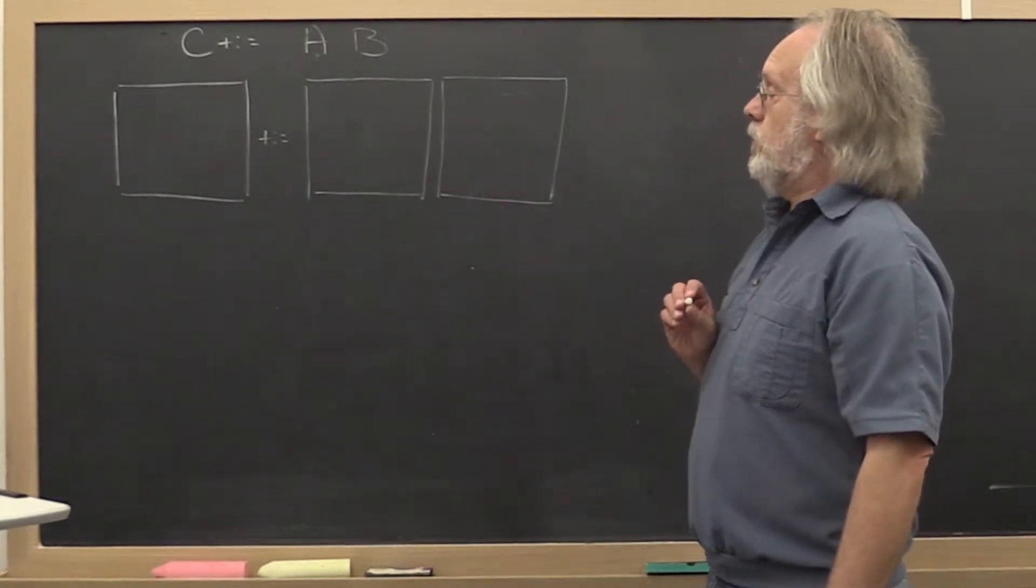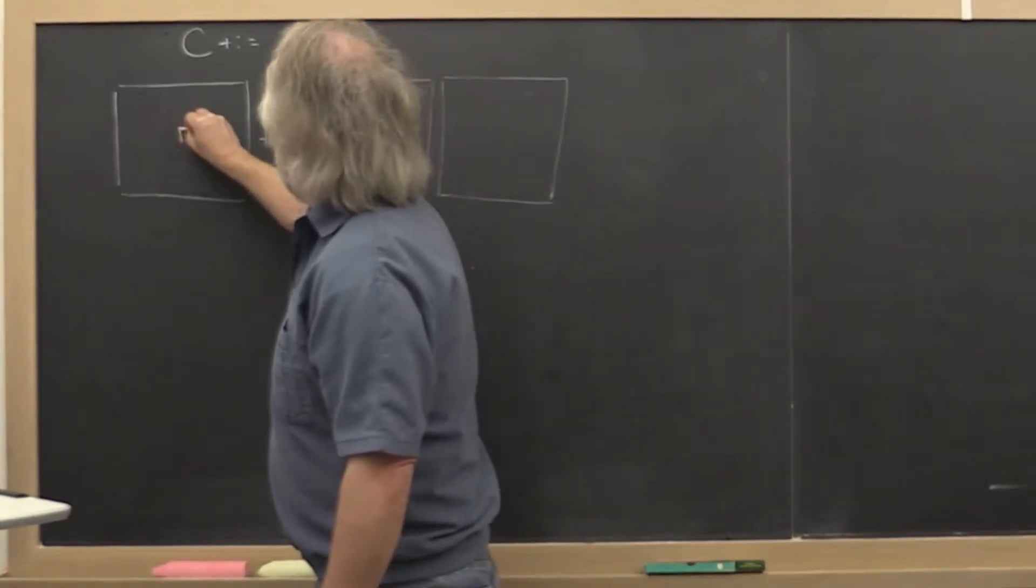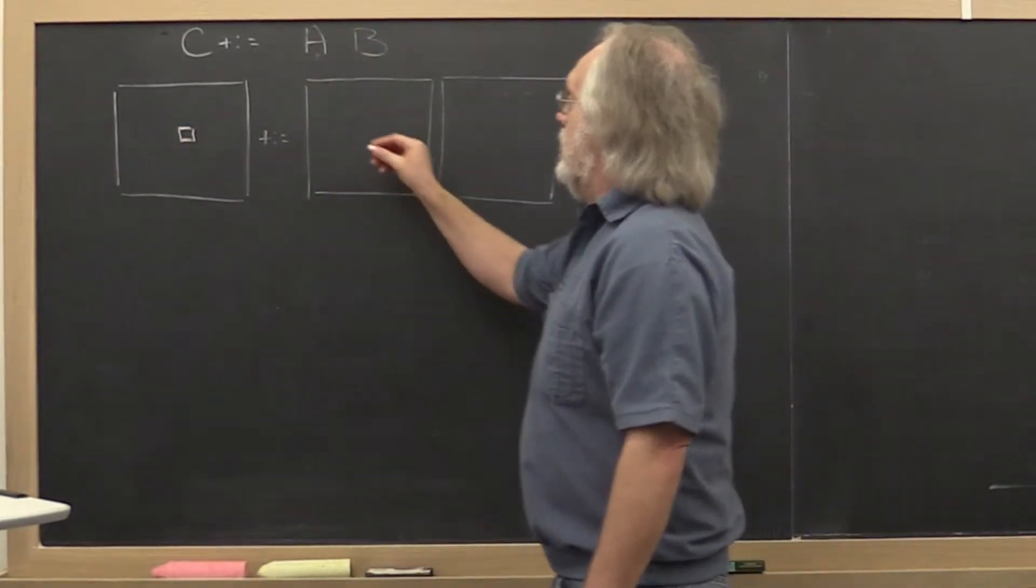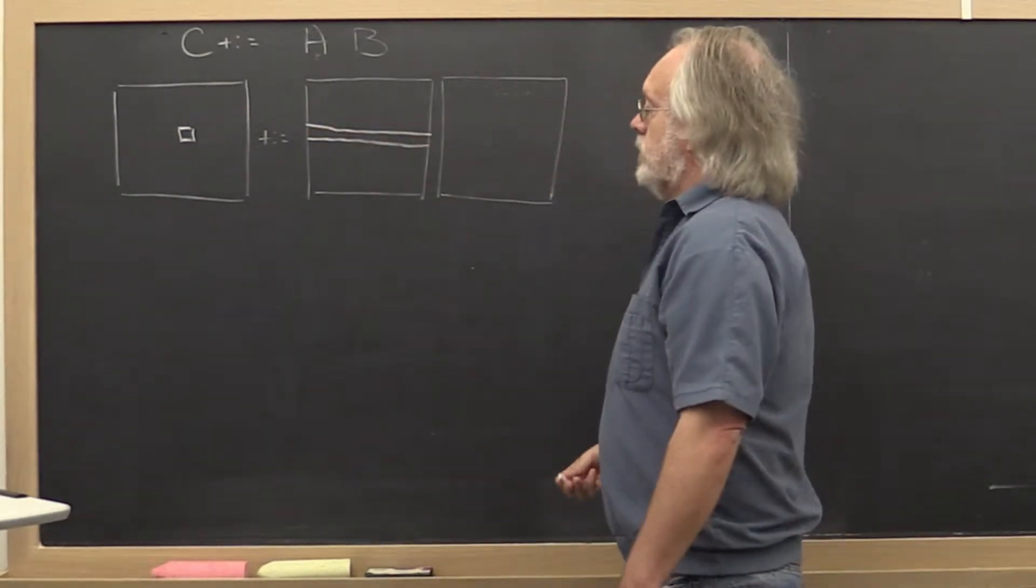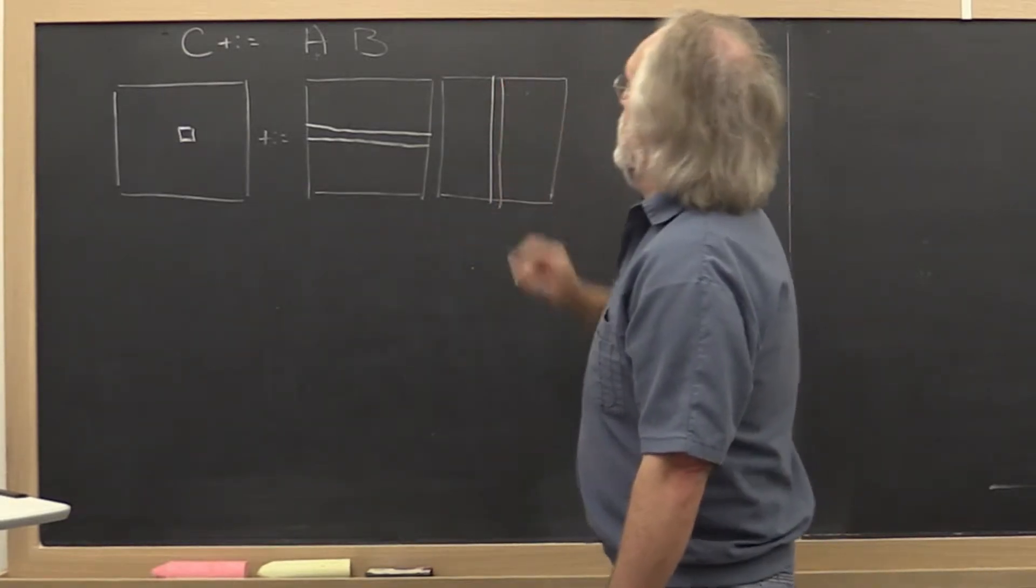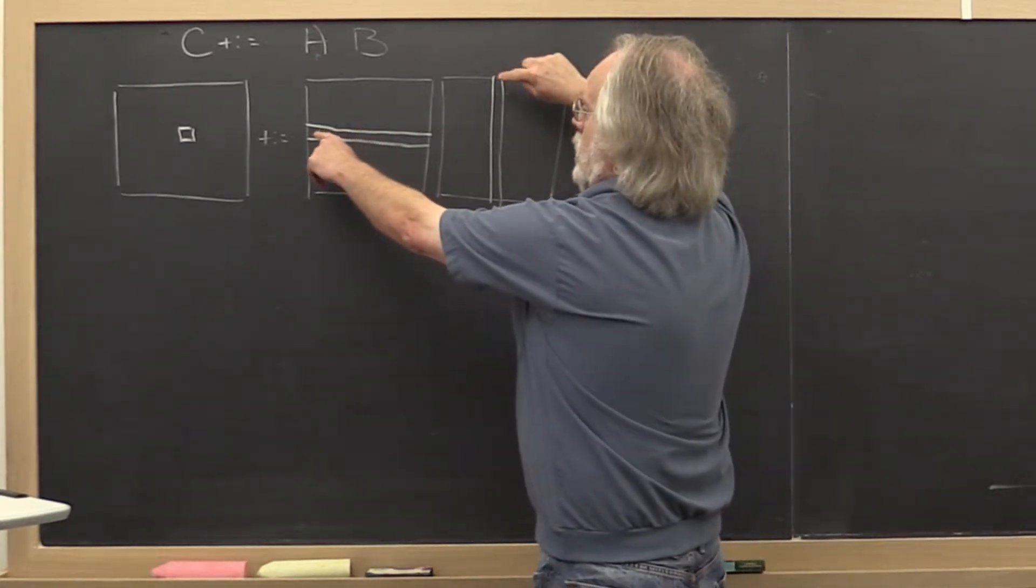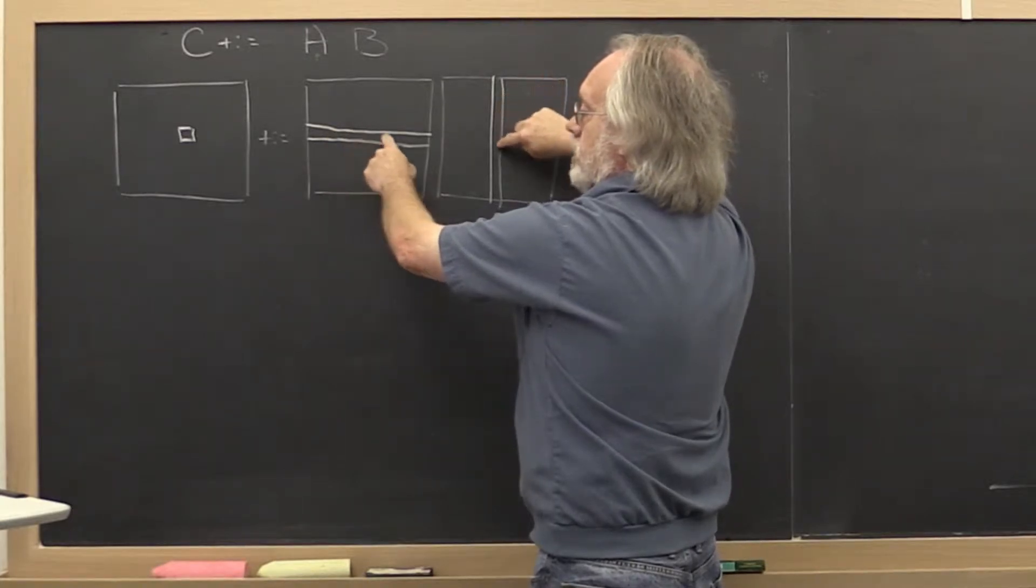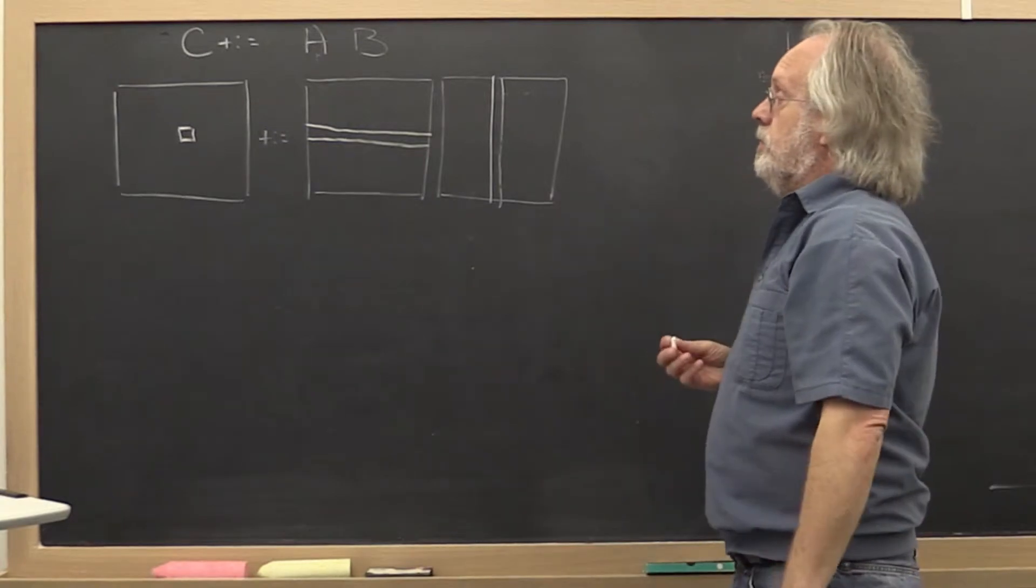Now let's go back to the original matrix-matrix multiply. If we compute an element in matrix C, then we can think of that as taking the dot product of the appropriate row in A with the appropriate column in B. And then you have to do the first elements multiplied together added to the second elements multiplied together, all accumulated into that entry in matrix C.